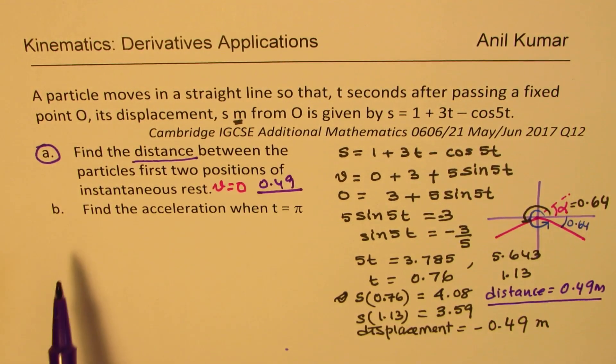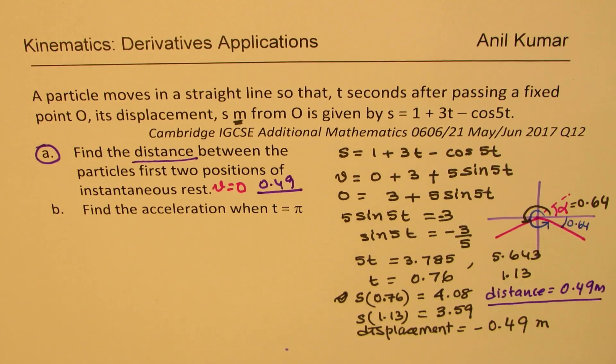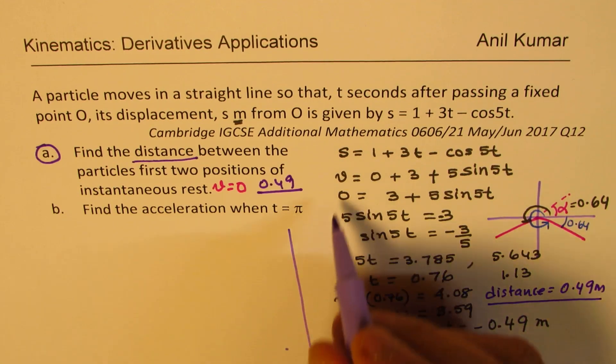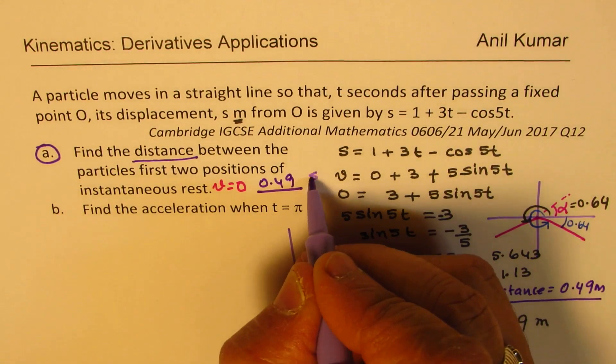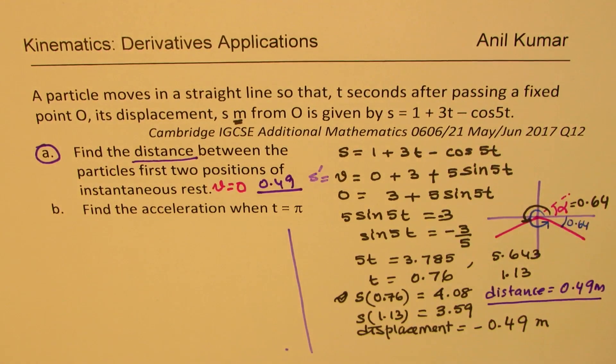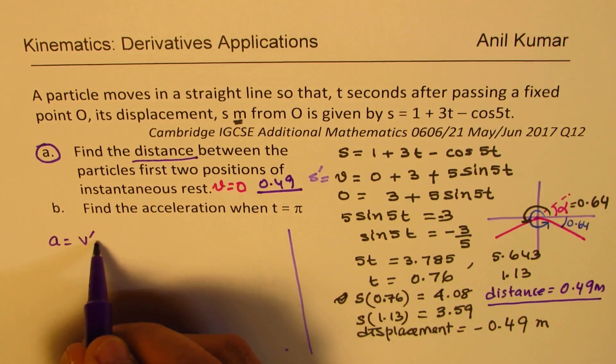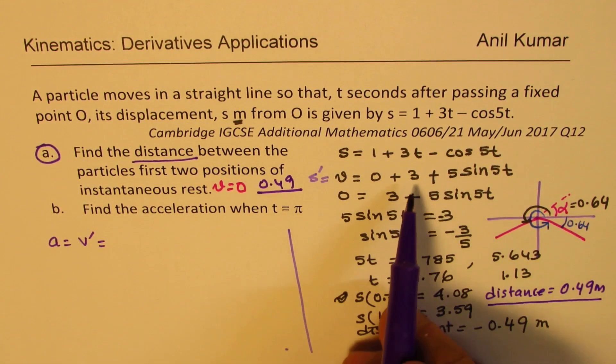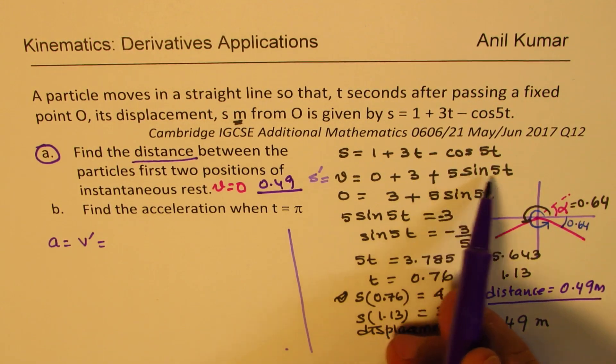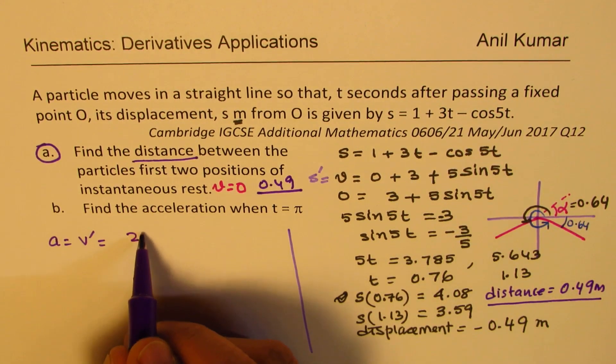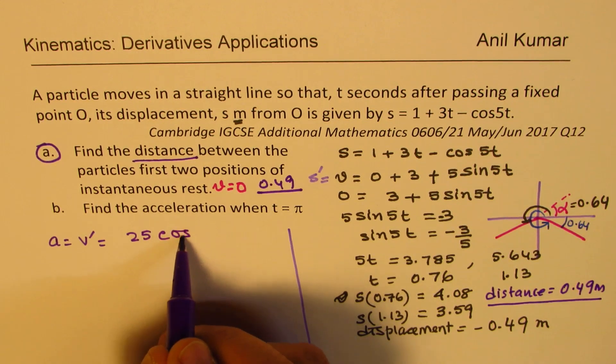Now part B is find the acceleration when t equals π. So acceleration is the derivative of velocity. Here we did the derivative of displacement to get velocity. Now we'll get acceleration, which is derivative of velocity. 3 becomes 0, 5 times 5 is 25, cos of 5t.